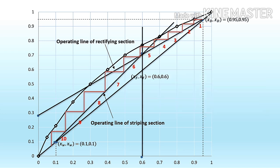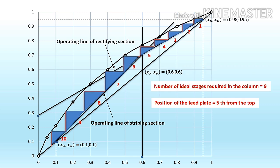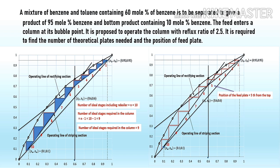The next step is to find the position of the feed plate. From the diagram, the intersection point of the operating lines of the stripping and rectifying sections lies in the fifth triangle, which represents the feed plate. Hence, the feed plate position is the fifth from the top. In summary, the number of ideal stages required is 9, and the feed plate is the fifth from the top. This is how we calculate the number of ideal stages in a distillation column using the McCabe-Thiele method.